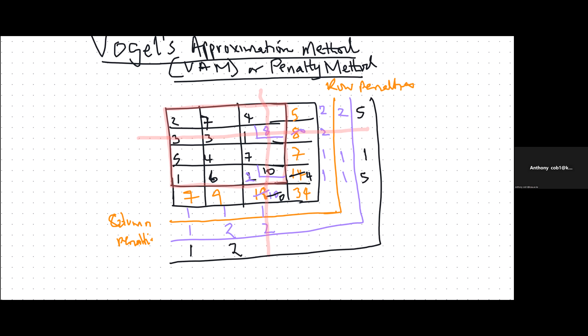Five is tied, so I choose the one that will give me the least cost — I'll prefer this row over the other. I assign to this cell: we transport either four or seven, so we put a four. Take away four to get zero, and take away four to get three. Then delete any row or column which has been satisfied — we delete this row.